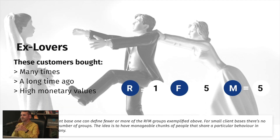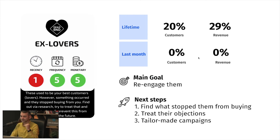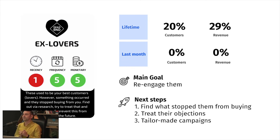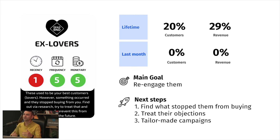Ex-Lovers bought a long time ago — lowest recency but highest frequency and monetary values. Last month they didn't participate in revenue, but over the total lifetime of the shop they could have generated 25% to 40% of your total revenue. The main goal is to understand what stopped them from buying so you can re-engage them, and to understand what to fix in terms of customer experience, product assortment, or marketing campaigns. Treat their objections and run tailor-made campaigns. If you can't reactivate many of them, the key is to not lose the ones you currently have by gaining wisdom from this customer research.